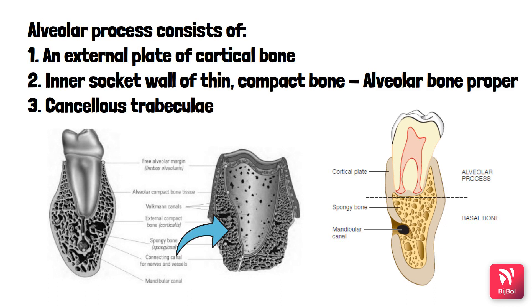The interdental septum is formed by cancellous trabeculae situated between the cortical bone and the compact bone. In the picture you can also appreciate a part called the basal bone, which is present in the apical portion of the jaw and is not related to the teeth — it is the portion of the jaw located apically that is unrelated to the teeth.